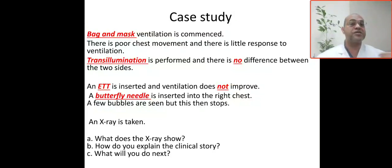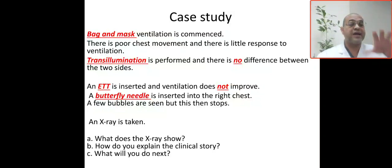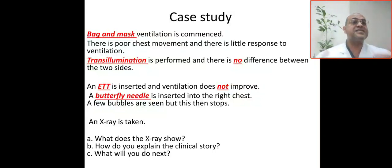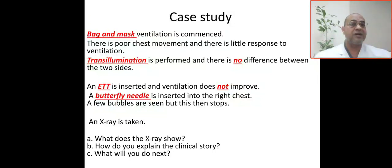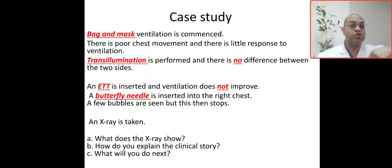There is no difference between the two sides on transillumination. An ETT was immediately inserted and positive pressure ventilation given. Still no chest rising and cannot appreciate breath sounds bilaterally. Oxygenation is not improving, so a butterfly needle is inserted.